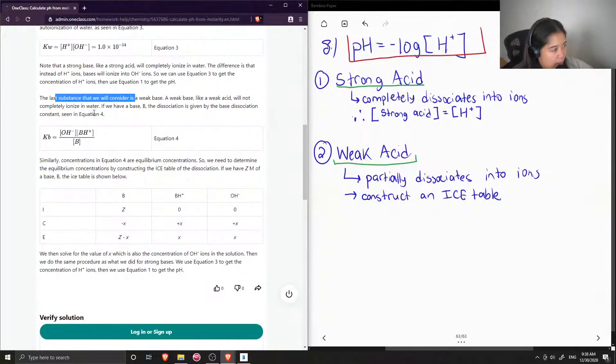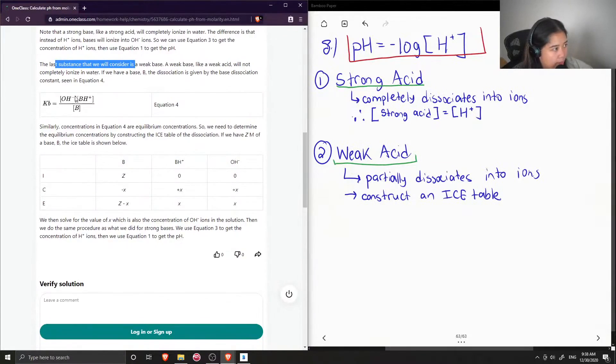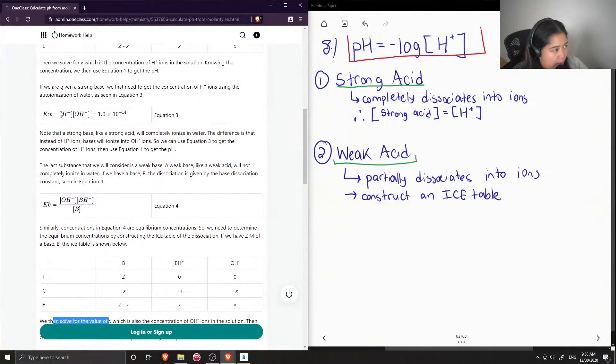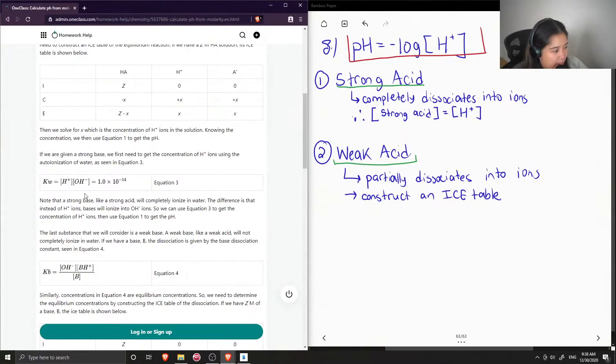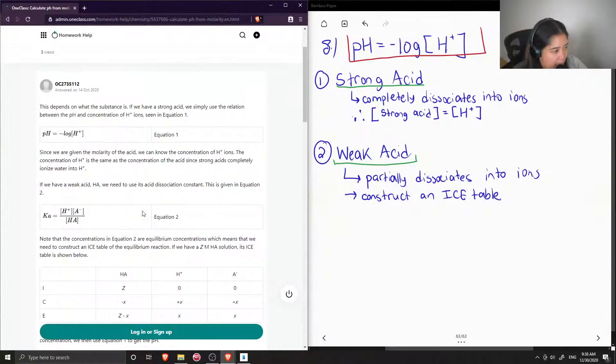And you can also have an instance where we have a weak base, so it doesn't completely ionize. They show the relationship with Kb. Similarly, concentrations in equation 4 are equilibrium concentrations, so we need to construct another ICE table and then solve for the value of X, which is the concentration of OH- ions in solution. Once you find the concentration of OH, you need to plug it into the Kw equation to solve for H+. And then once you find the concentration of H+, then you plug it into equation 1.